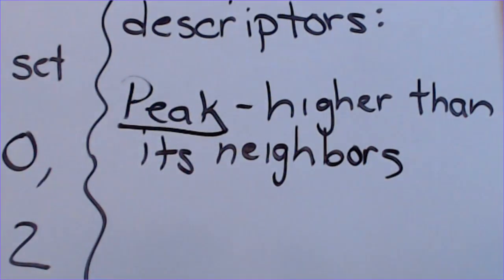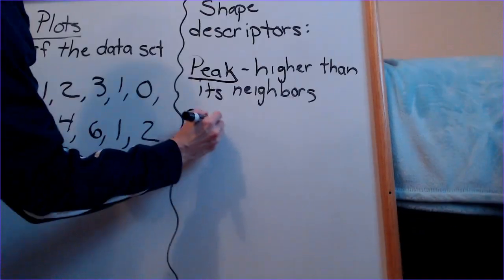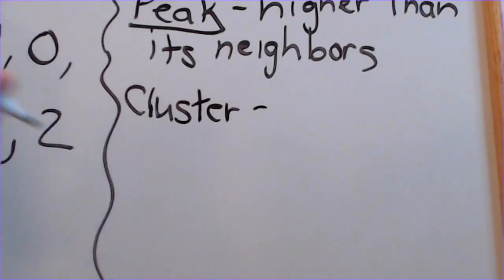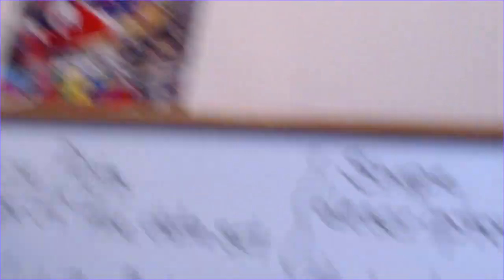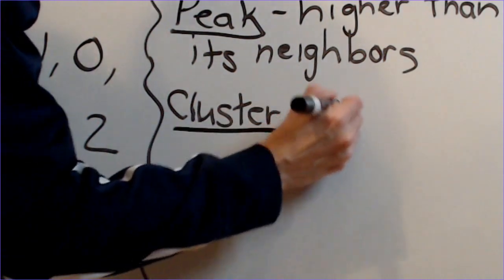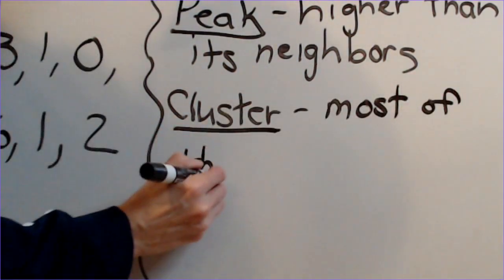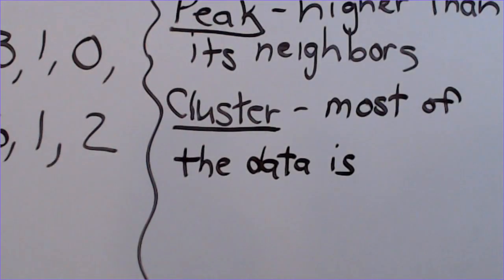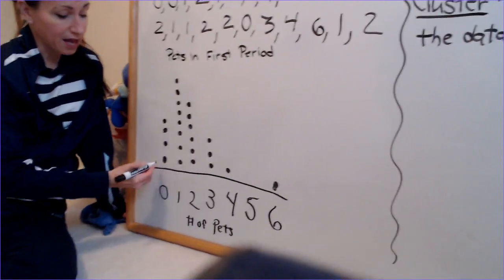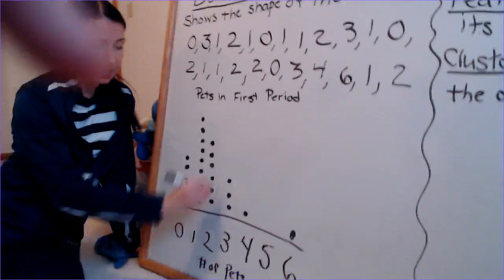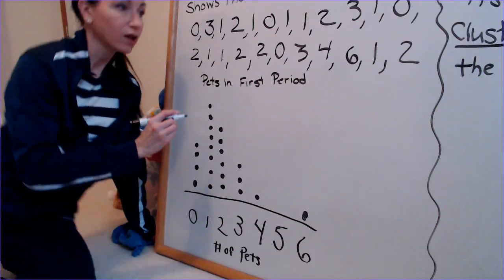The second vocabulary word is a cluster. A cluster shows where most of the data is grouped together. Looking back at our graph, I would say our cluster is between zero and two — that's where most of the dots are.